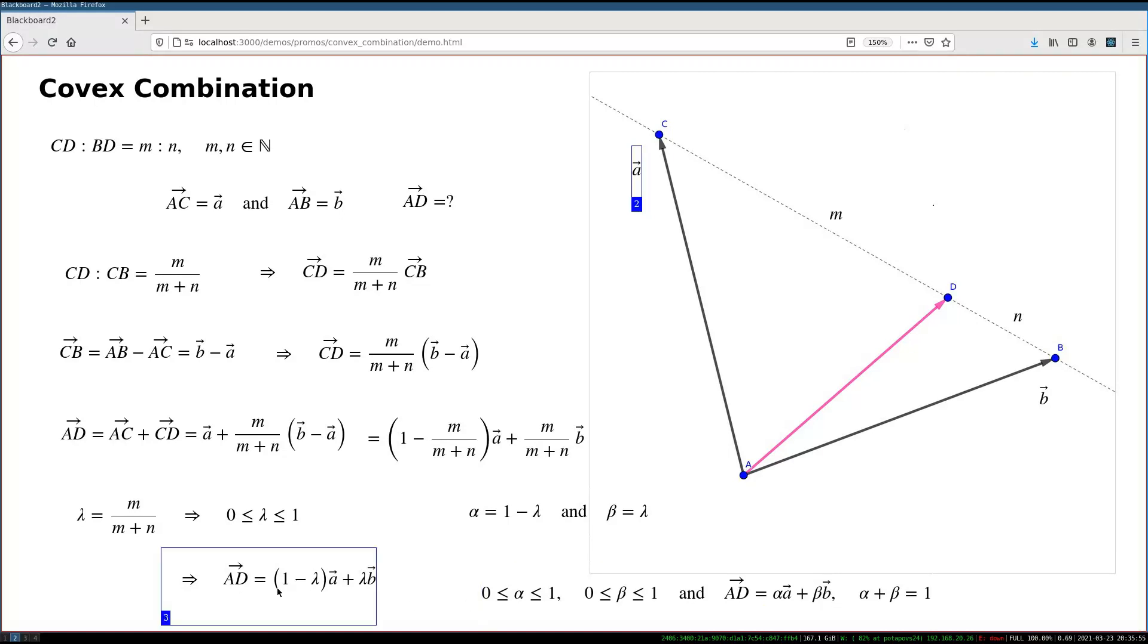The geometrical interpretation of this combination is this. When you alter this lambda, I mean, originally we set this lambda, or we set this alphas and betas to be relevant to this quotient M to N, but effectively you can